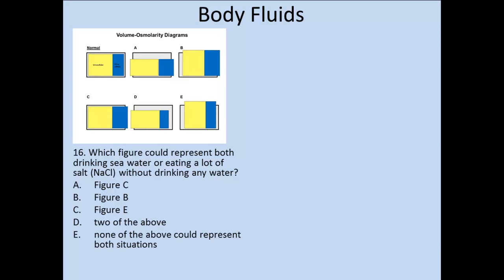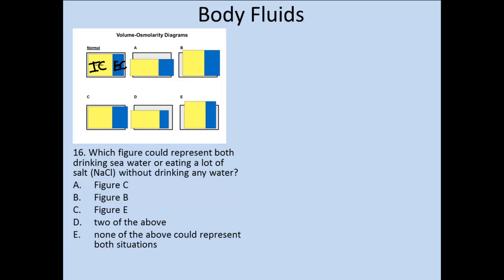If we look at our normal volume-osmolarity diagram shown in the upper left-hand corner, the intracellular fluid is shown in a yellow box on the left-hand side, and the extracellular fluid is indicated on the right side in the blue box. The black line surrounding the diagram indicates normal volume and normal osmolarity for each of the body fluid compartments.